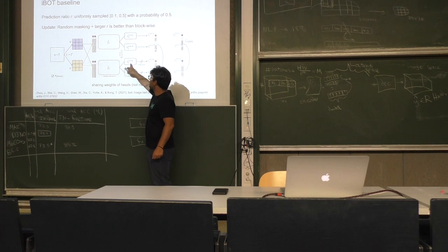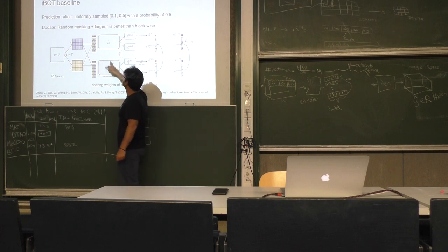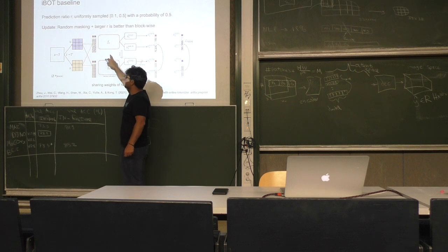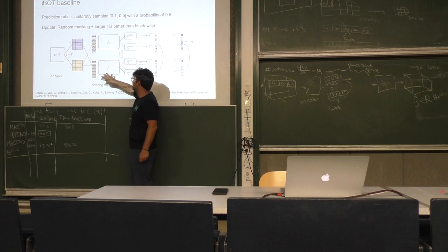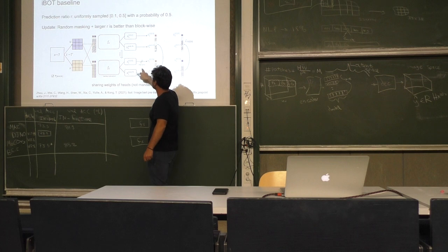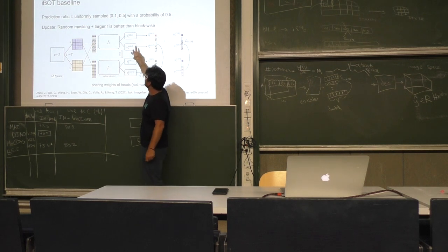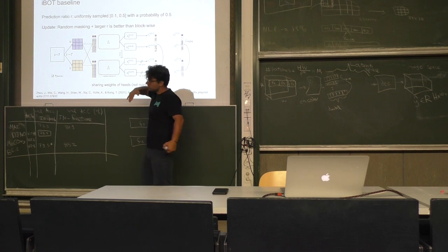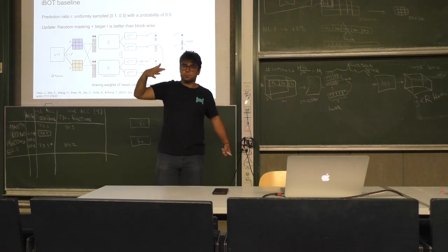This is the most elegant way to do it. CLS is the classification head. This is two identical networks. Here online refers to an exponential moving average, as always, this self-distillation approach. This is the teacher model, an exponential moving average of the student. That's why there are no gradients.